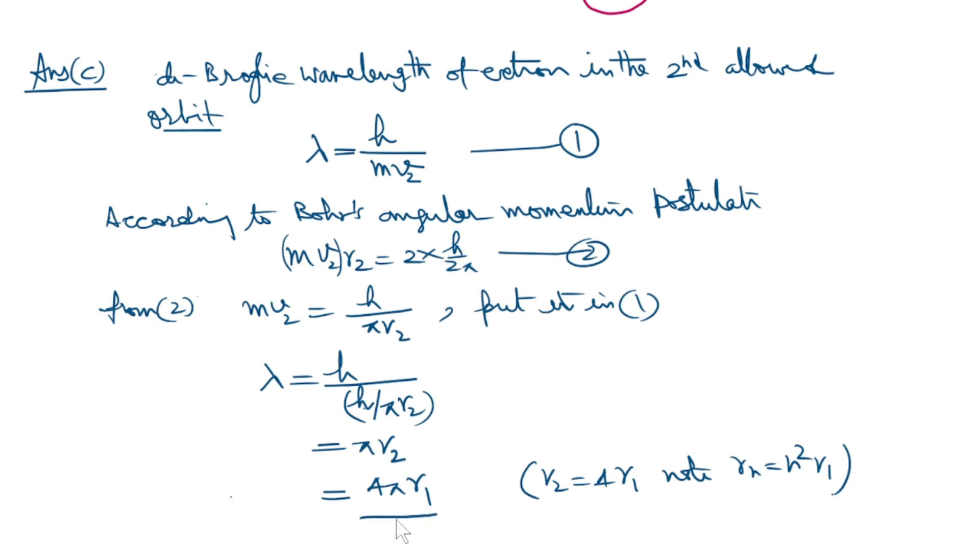So this will be the required value of the wavelength in the second allowed orbit of the hydrogen atom in terms of R1.